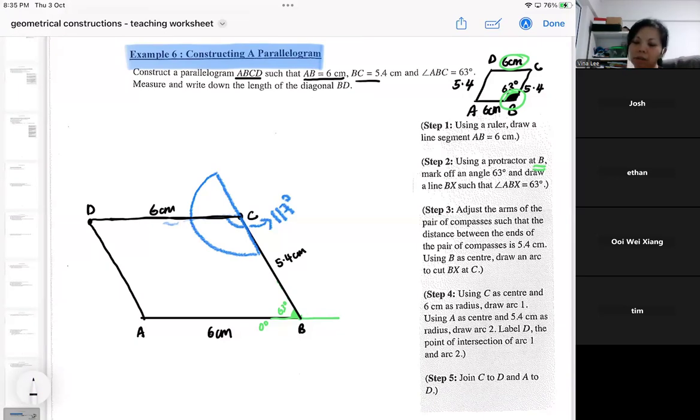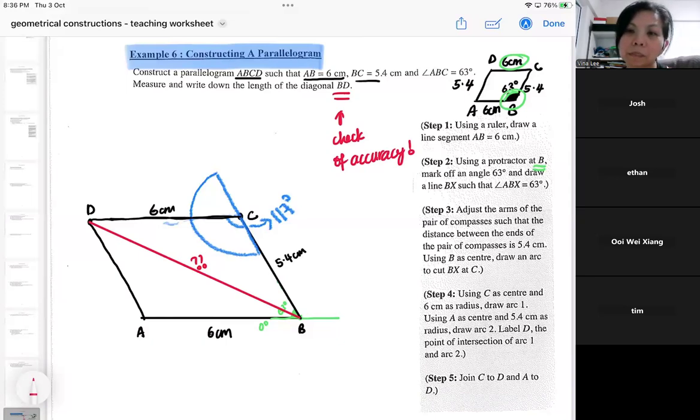So that is the way that you can use the property to help you. And usually, later on, they ask you for BD. So you actually need to measure BD. That means you've got to use your ruler to measure. So this one is a check of accuracy. That means the marker will use this to check whether your construction is accurate or not. So you've got to try it out physically if you have the thing. Otherwise, draw a rough one, make use of the property. So mine is just a very rough one. I'll see you earlier. Thank you very much.